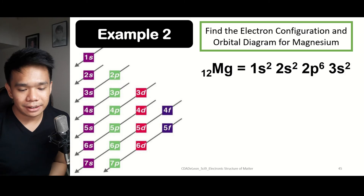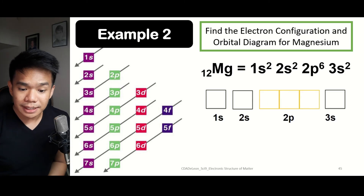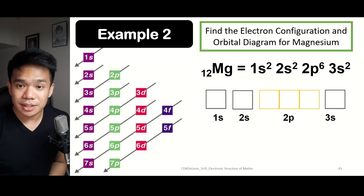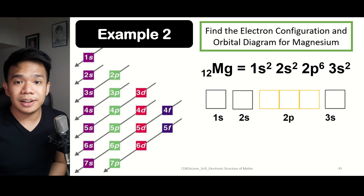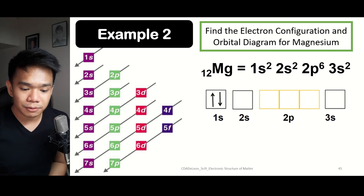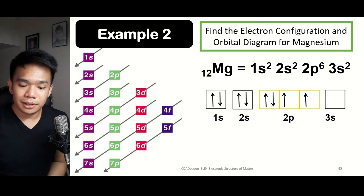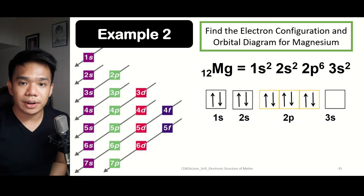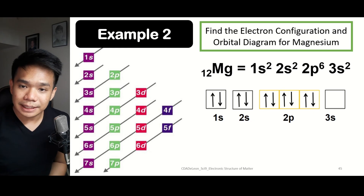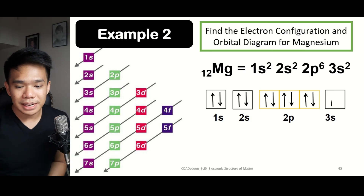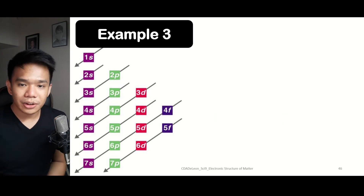Now let us make the orbital diagram for magnesium. Since all sublevels have reached the maximum number of electrons, all boxes will be filled in with the respective arrows. For 1S, we have 2 arrows. For 2S, 2 arrows. For 2P, 3 arrows pointing clockwise and another 3 pointing counterclockwise. And for 3S, an arrow up and an arrow down.